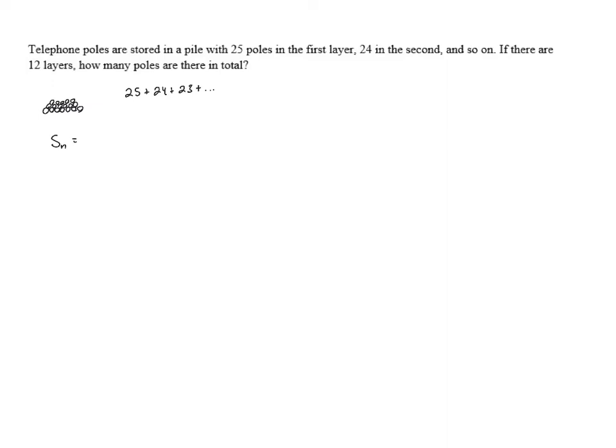We've got S sub n equals n over 2 times the quantity 2a plus n minus 1 times d. In this case, we are looking for S sub 12 because there are 12 layers. So we've got 12 terms that we're adding together.